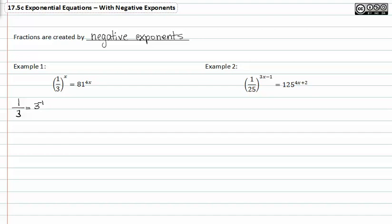This is a true statement because if I think of it backwards, if I wanted to change 3 to the negative 1 into a fraction to get rid of that exponent, I just rewrite it like this. So, I'm going to write 3 to the negative 1 in place of the one-third raised to the x is equal to 81 to the 4x.